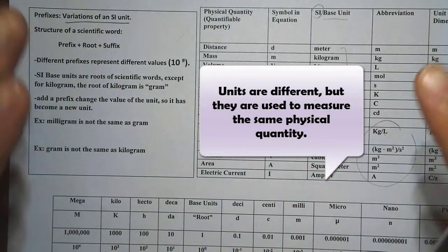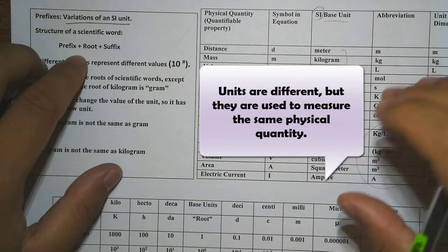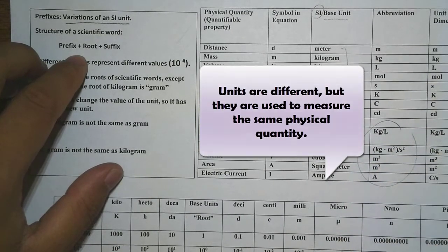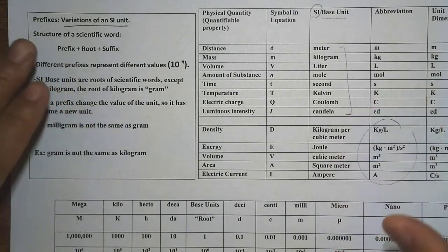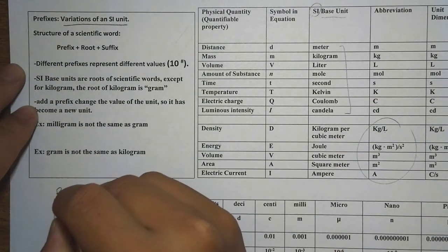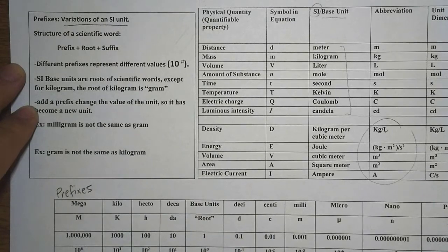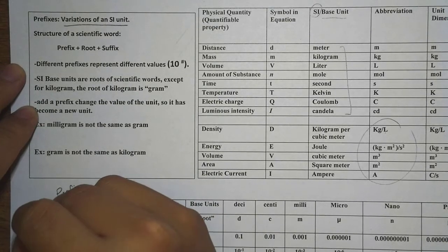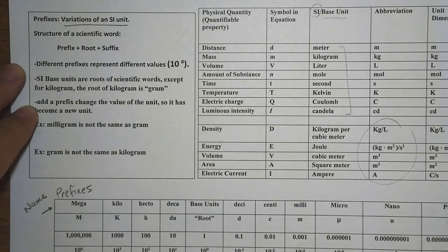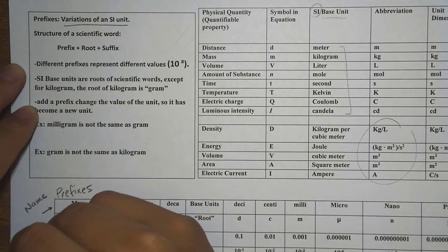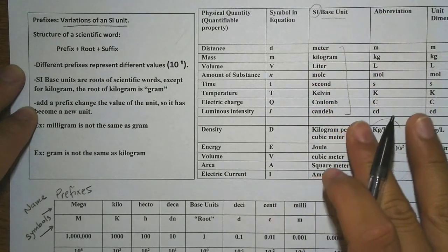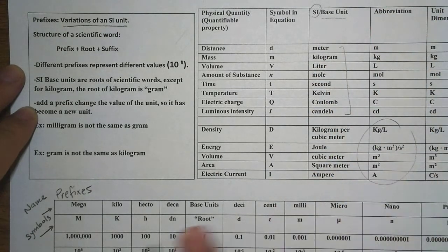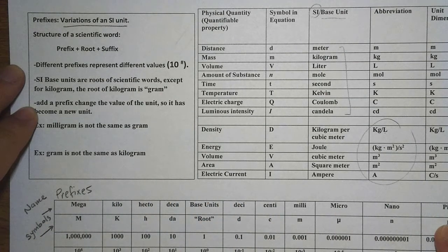Changing the prefix will completely change that unit — we would make a completely different unit with different values. So what are the prefixes that deal with SI? Here I have the prefixes listed. This is the name of the prefixes, and below the name we have the symbols of the prefixes. Just like units in the SI system, we have abbreviations — specifically, symbols that represent each of the prefixes.